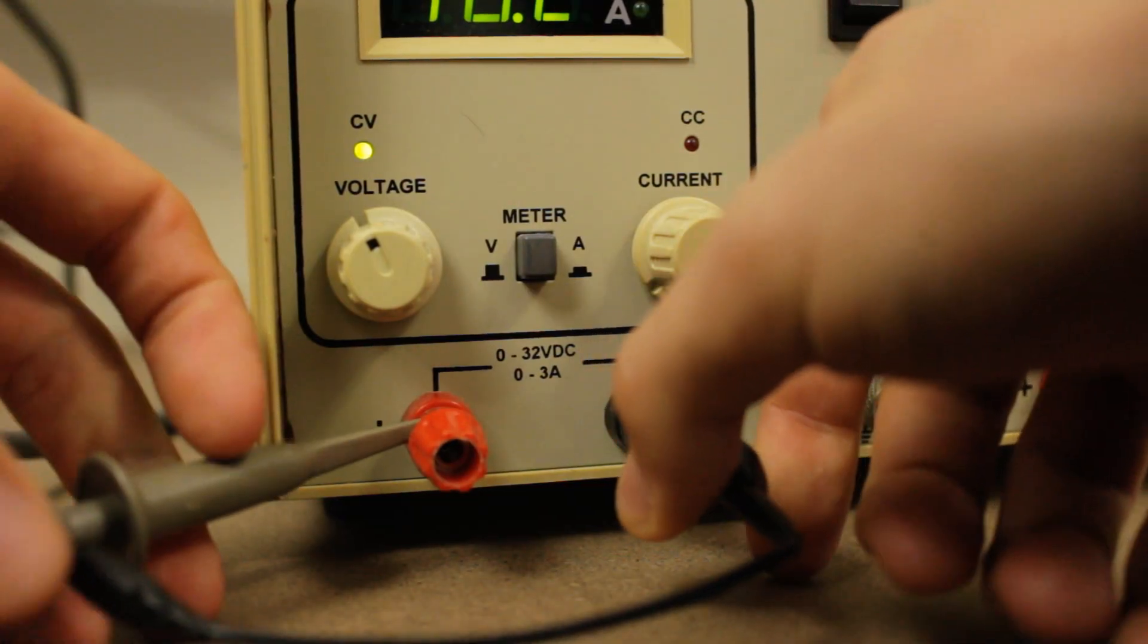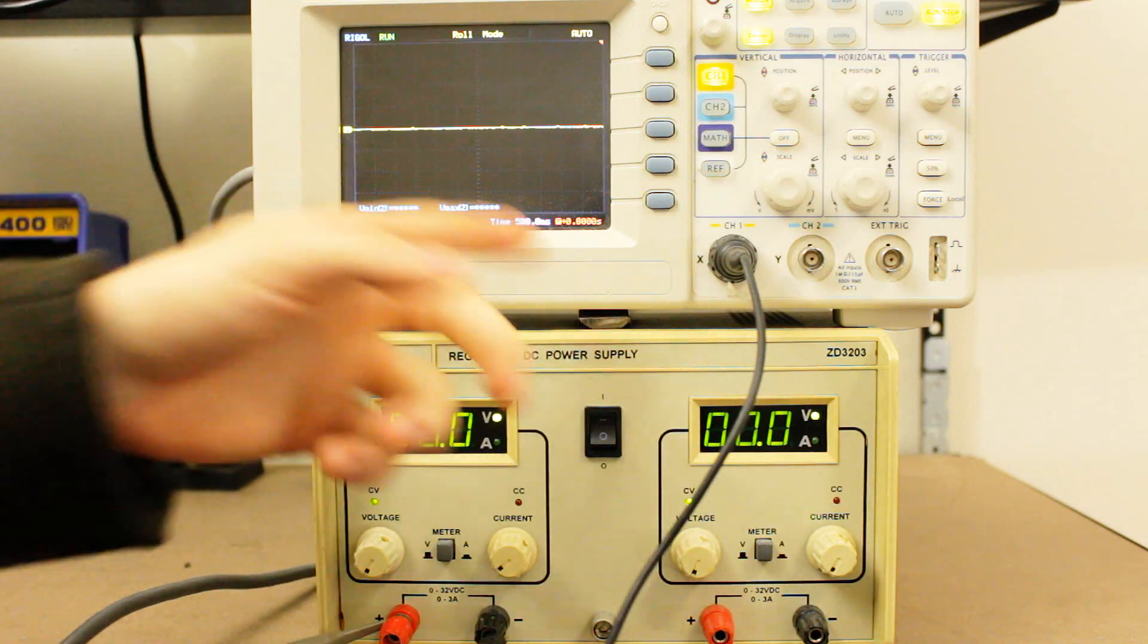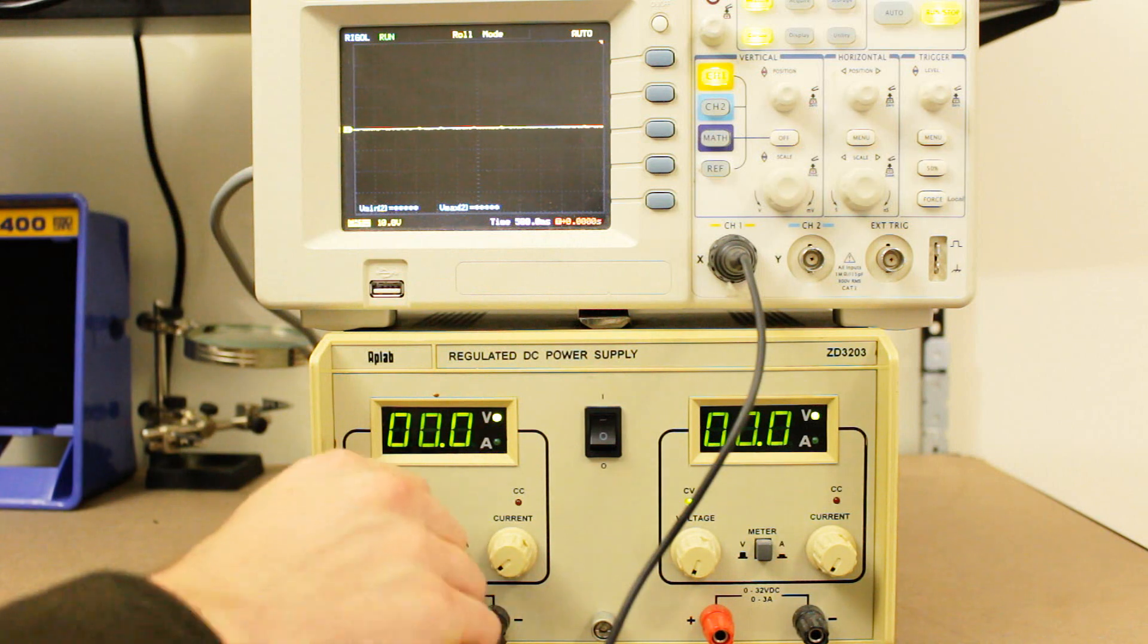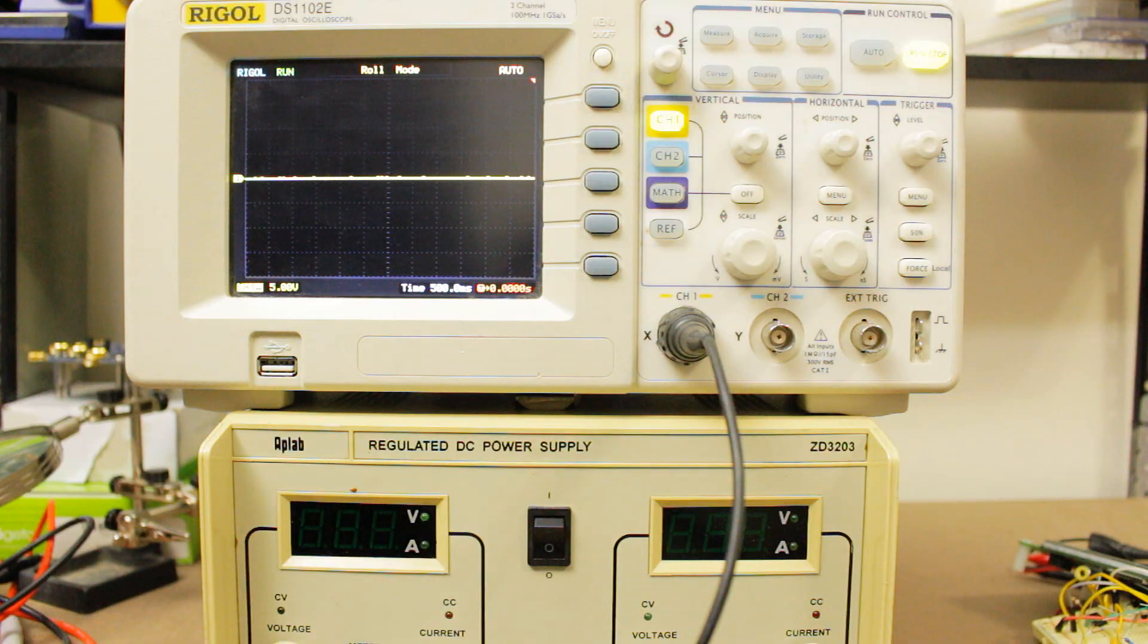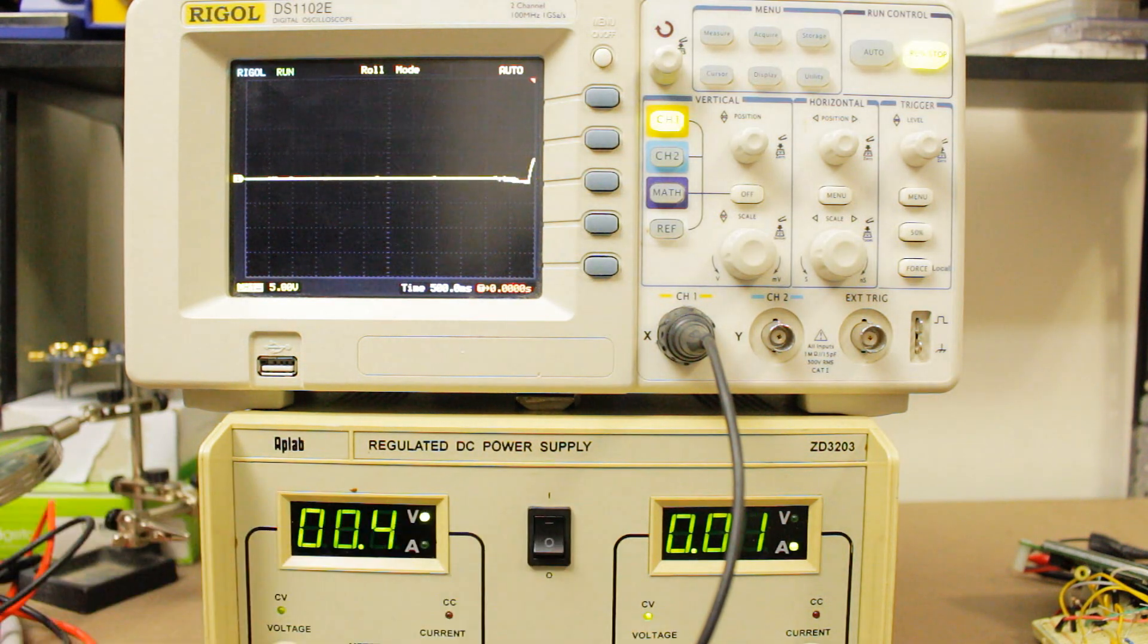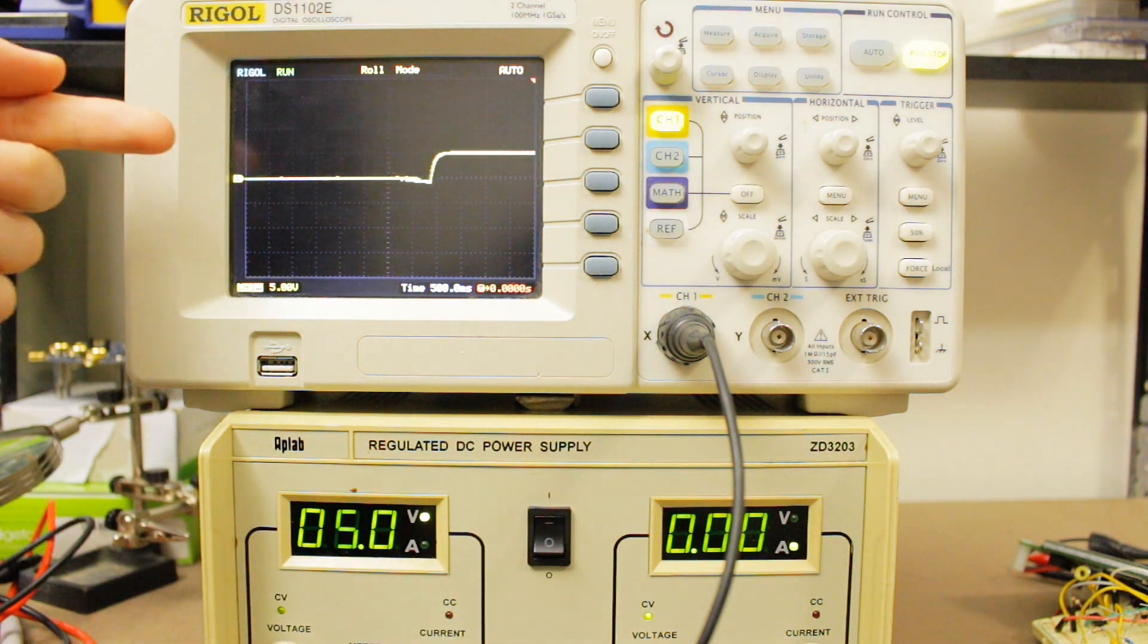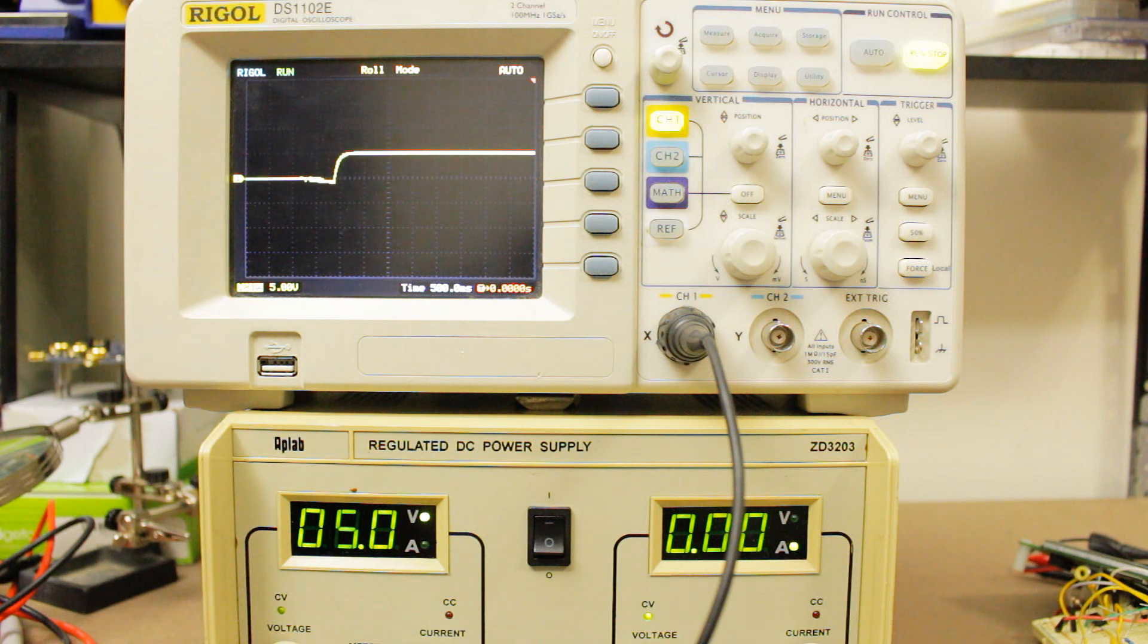I've just connected my scope up to the supply and I've got it on rolling horizontal so you can see the output voltage kind of moving on the screen there. There's actually a couple of problems. The first one is there's this horrible transient response when switching the supply off. So if I go ahead and turn this on, I've set it to 5V so you can see that the output reaches 5V relatively quickly and it doesn't overshoot too much.